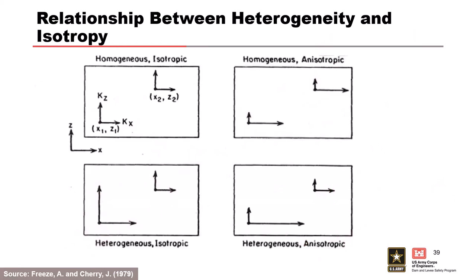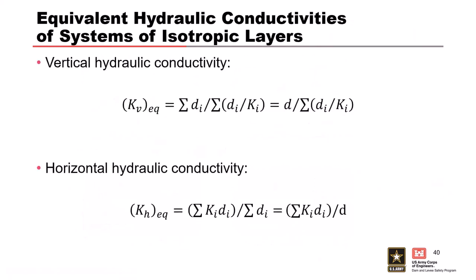In some cases you may want to create an equivalent hydraulic conductivity to represent a layered system — this is very common if you're doing a blanket theory evaluation on a levee. There are two equations for vertical and horizontal equivalent hydraulic conductivity. It's basically a compilation of the overall thickness of your layer, plus a summation of the individual layer thicknesses and permeabilities. For vertical calculations you divide; for horizontal calculations you multiply those values together.